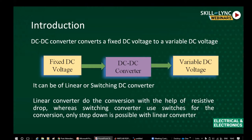We will see the introduction about the DC-to-DC converter. As the name indicates, the DC-to-DC converter converts DC at one level to DC at another level, or it converts a fixed DC voltage into a variable DC voltage. We have a fixed DC voltage that is given to the DC-to-DC converter, which converts the fixed voltage into variable DC voltage, and this variable DC voltage can be used for many applications.